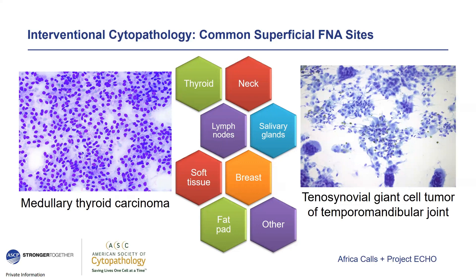Other sites include soft tissue and breast, although core biopsy is the preferred diagnostic modality for breast diagnosis. There are still situations where fine needle aspiration may be preferable—for example, evacuating a cyst, if the patient is status post-mastectomy and reconstruction, or if dealing with a very small or superficial lesion. We also get requests for abdominal fat pads to look for amyloid deposition, and miscellaneous other sites such as the chest wall.